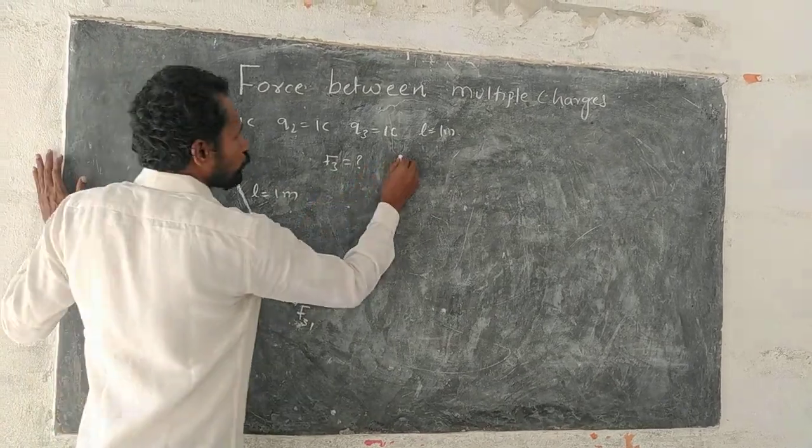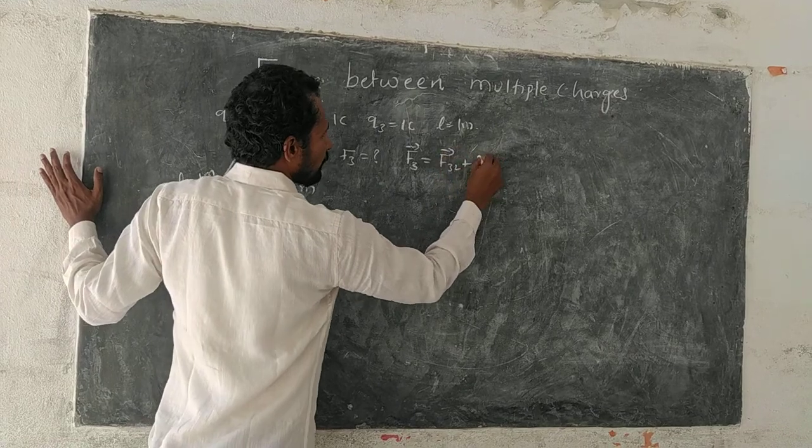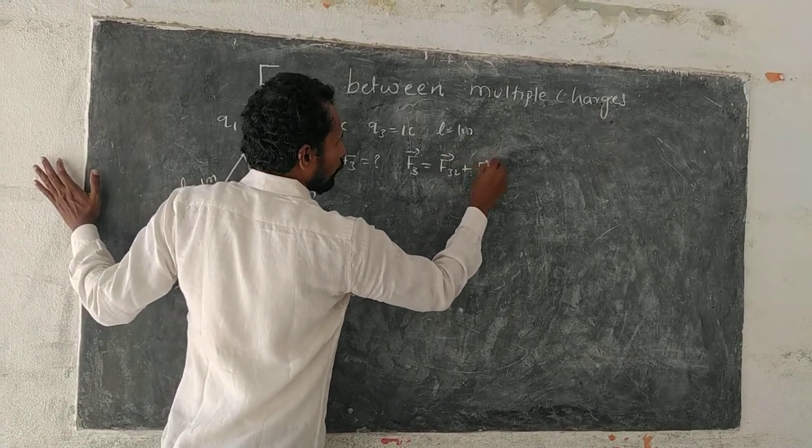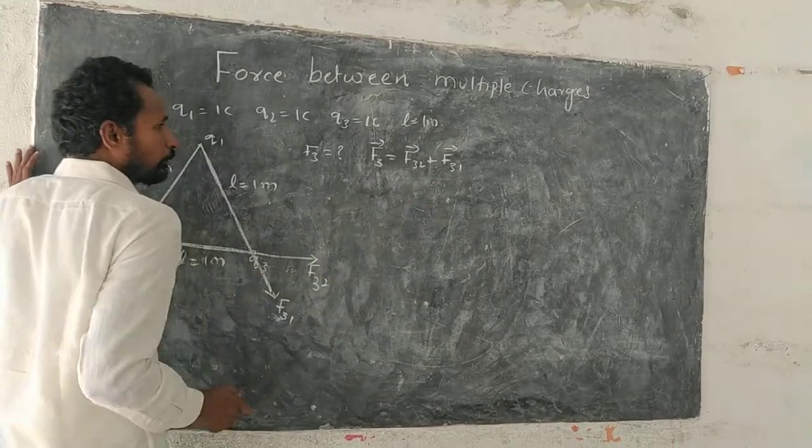Now, net force according to superposition principle, F3 equals F32 plus F31. This is vector sum.